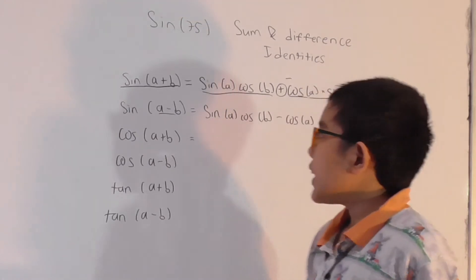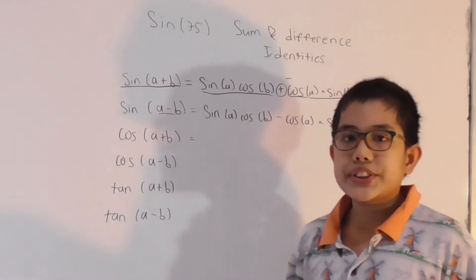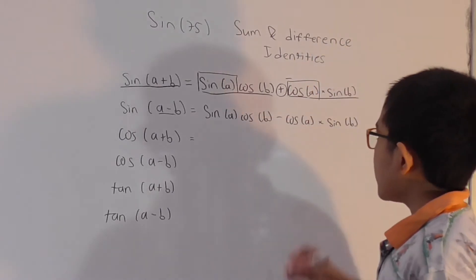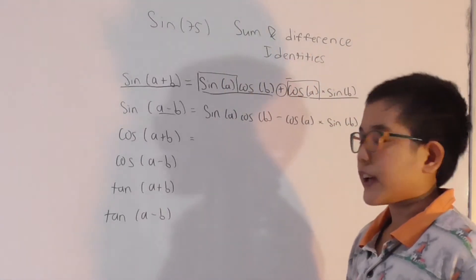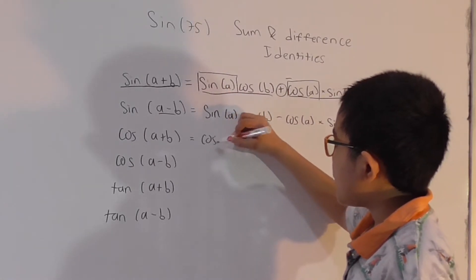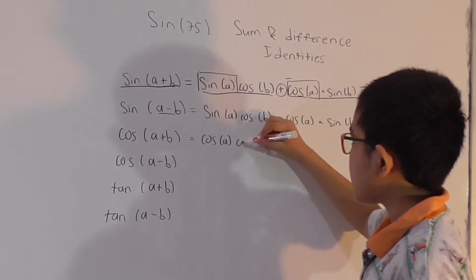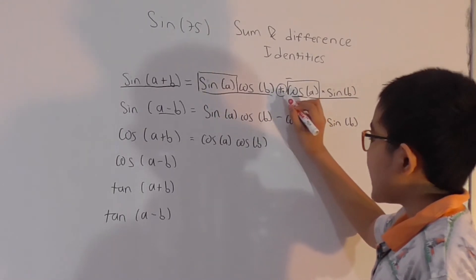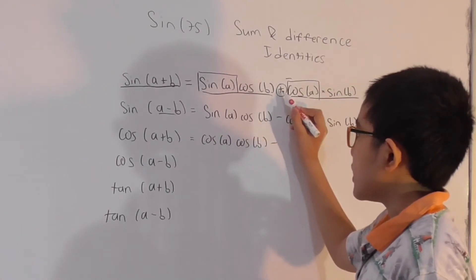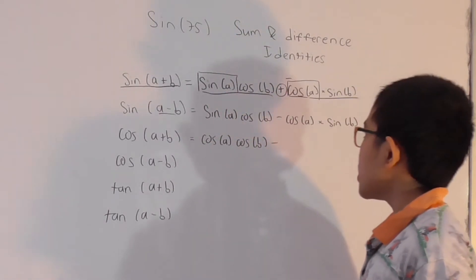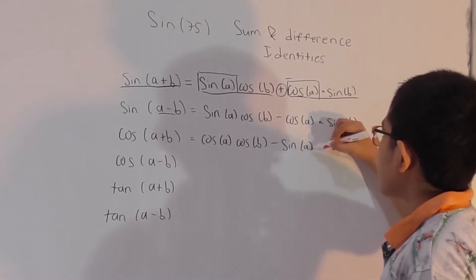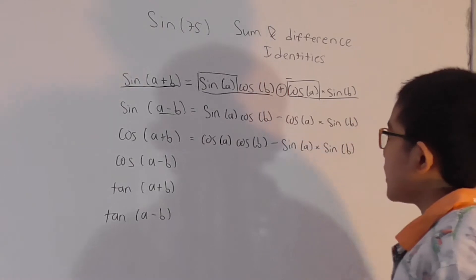For cosine of (A+B), we take sine of (A+B) but switch two terms — sine A and cosine A swap positions, so cosine A comes first. Also, the plus sign changes to a minus. So cosine of (A+B) equals cosine A times cosine B, minus sine A times sine B. Remember: for sine, plus connects with plus, but for cosine, plus connects with negative.